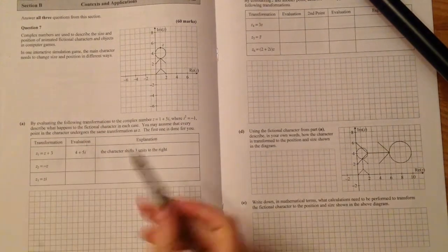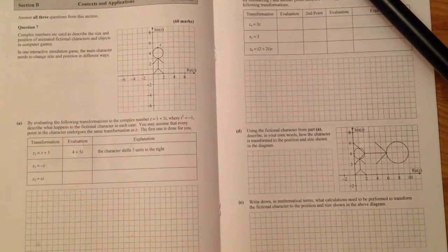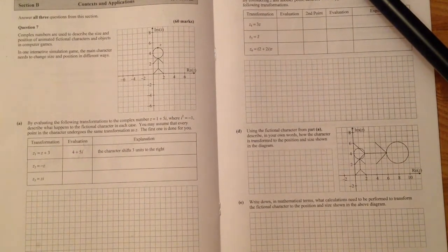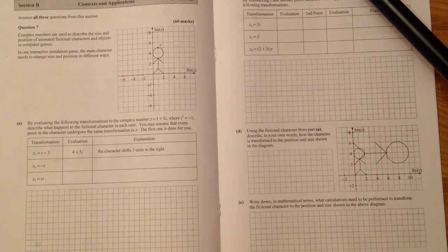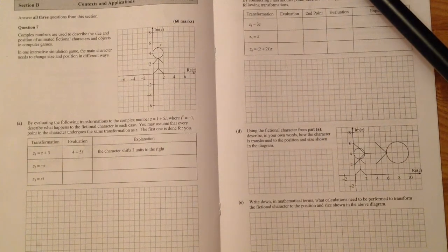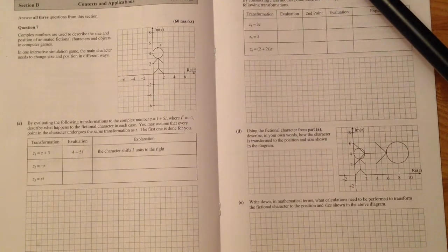So there he is there. You can kind of see he's got 1 plus 5i. Part A says, by evaluating the following transformations to the complex number z equals 1 plus 5i, where i squared equals minus 1, describe what happens to the fictional character in each case. You may assume that every point in the character undergoes the same transformation as z. The first one is done for you. So let's have a look.